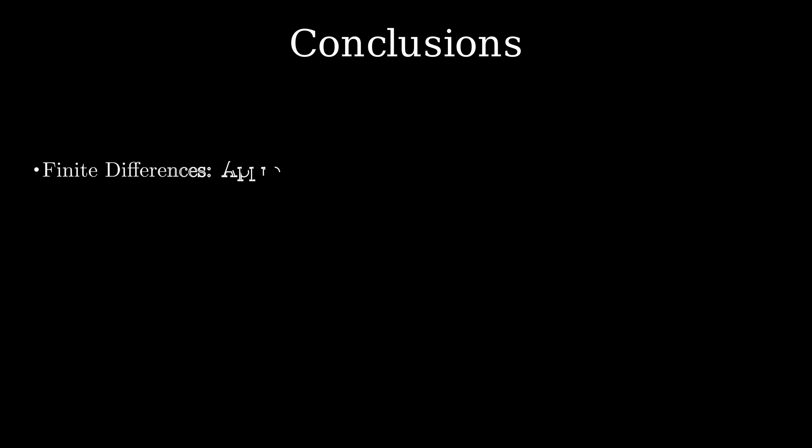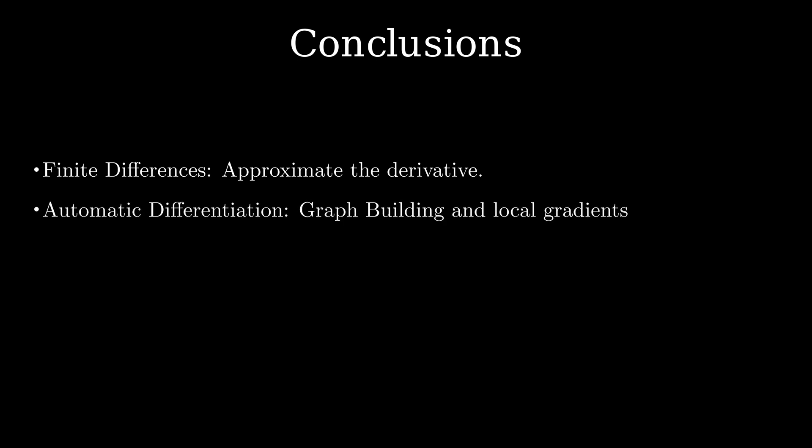Today, I discussed finite difference approximation to evaluate gradients and why it's not ideal for machine learning. Then I moved on to automatic differentiation and explained its key components like computation graph, local gradients and finally demonstrated how it uses chain rule and the computation graph to get the exact derivatives effectively.